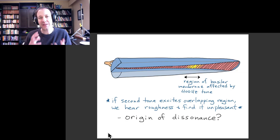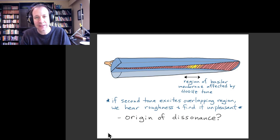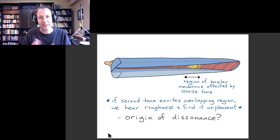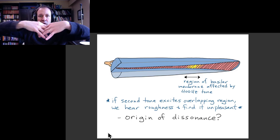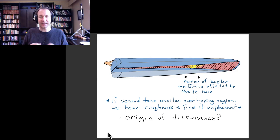Last time we talked about how if you have two pure tones with different frequencies that are too close together, you experience some unpleasantness or roughness in the combination. We understood that biologically this has to do with the fact that both tones are trying to excite regions on the basilar membrane that are very close together or overlapping.